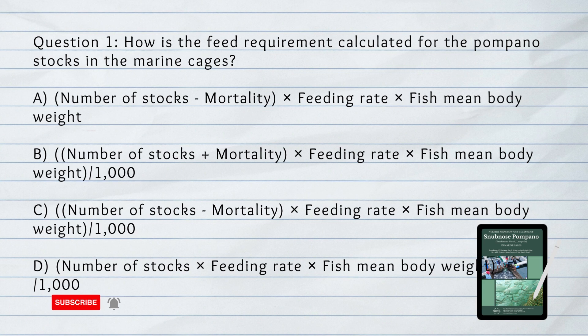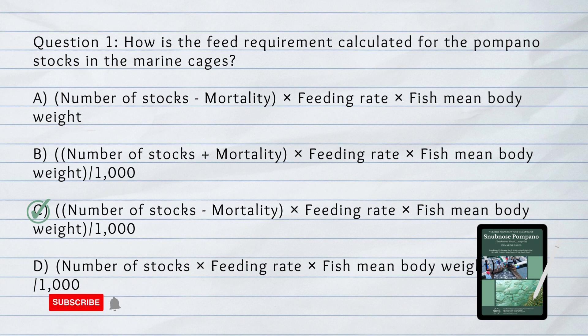Answer: Letter C. The difference between number of stocks and mortality, multiplied by feeding rate, multiplied by fish mean body weight, and divided by 1,000.